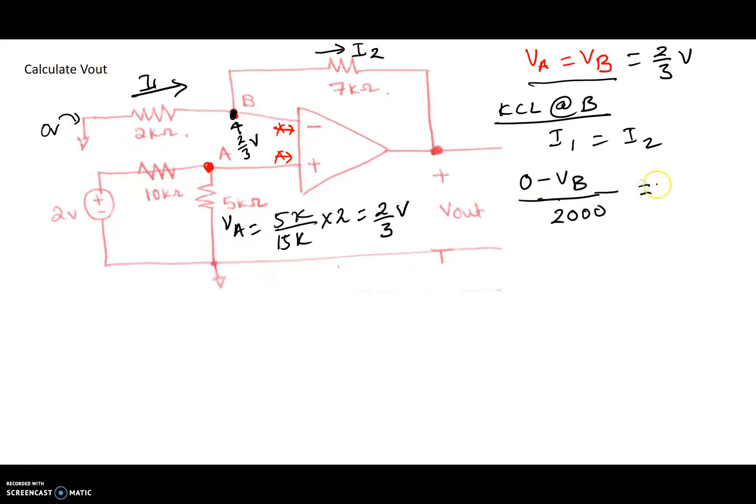And I2 is VB minus Vout divided by 7 kilo ohms, so 7000. So these zeros will all cancel out.